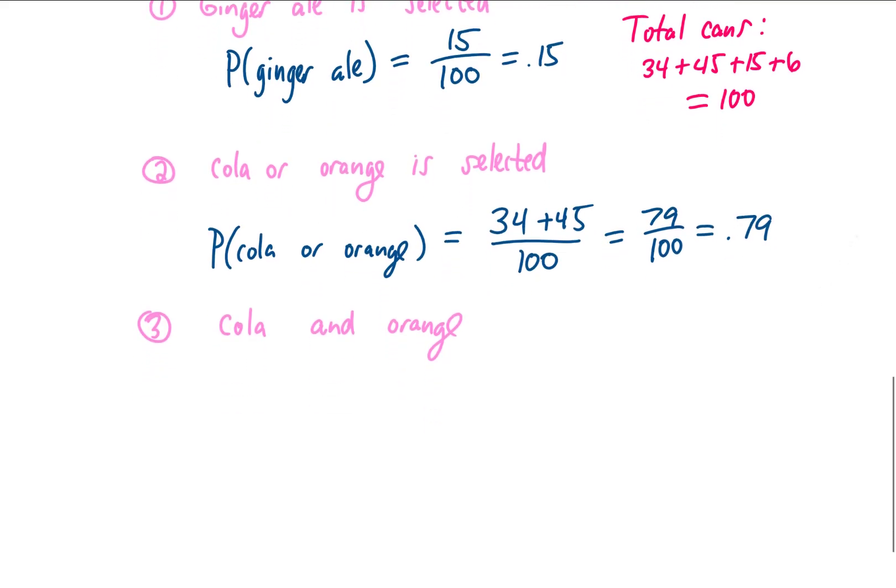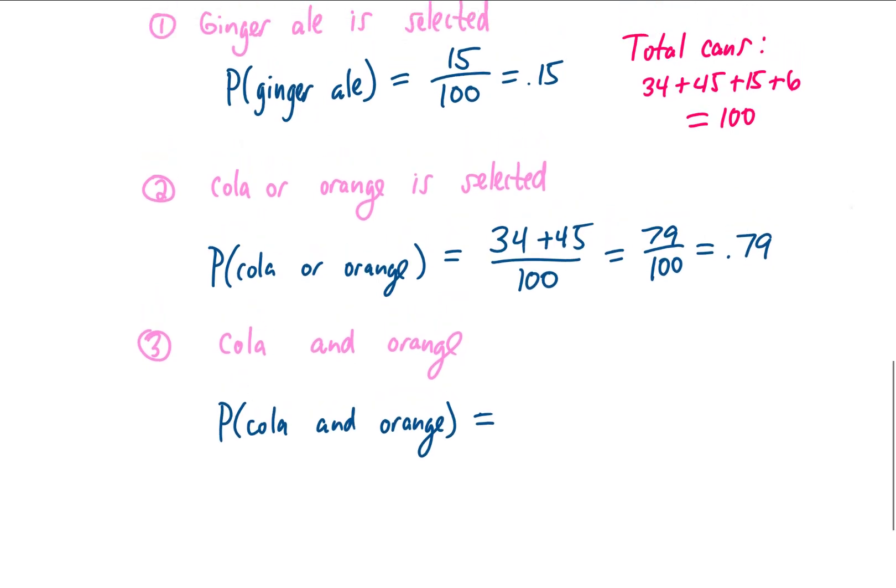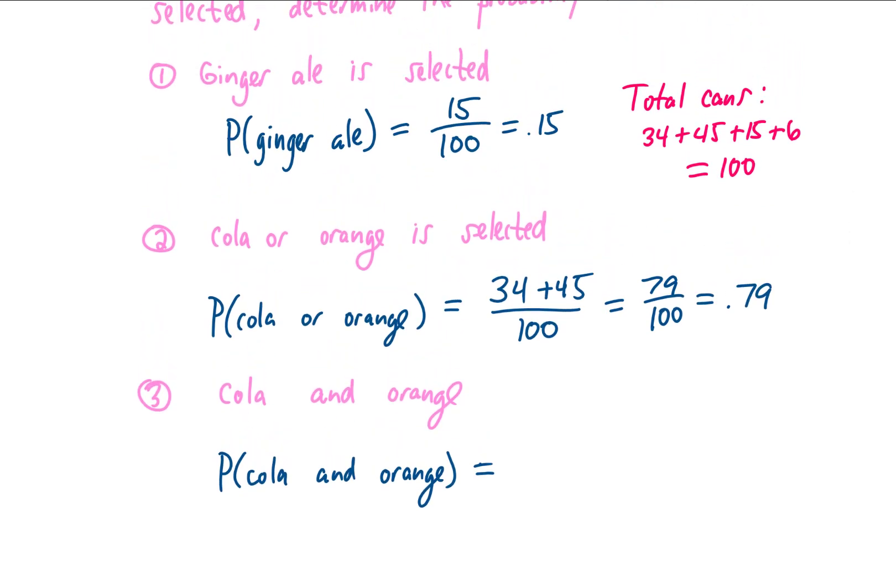Last question on this problem. What is the probability of selecting a cola and an orange soda? Well, in this example, we are just selecting one soda. So it's not possible to get both a cola and an orange from just one selection. So that probability is just going to be zero. In the future, we might draw two sodas from this cooler and ask the question, what is the probability of getting a cola and an orange? But for now, we're going to leave it right there.